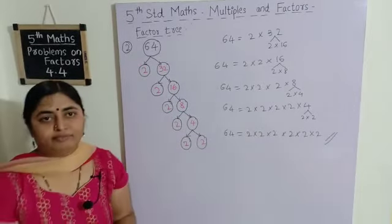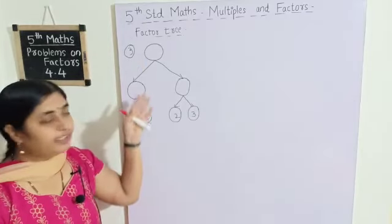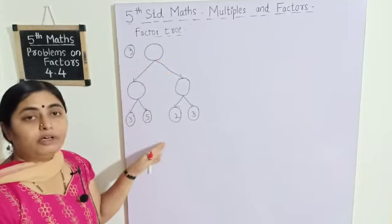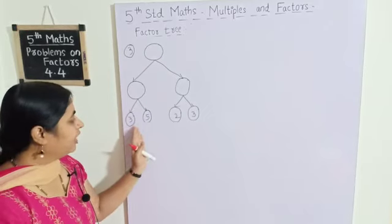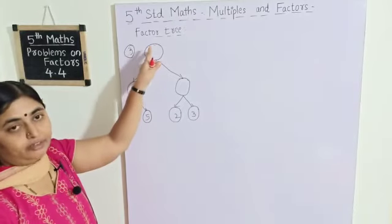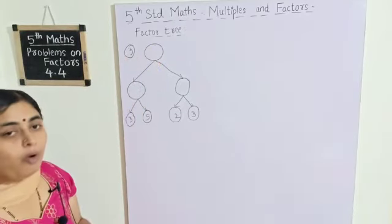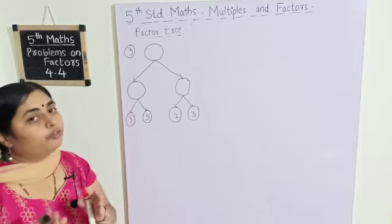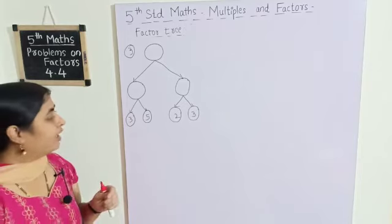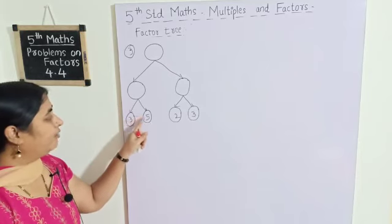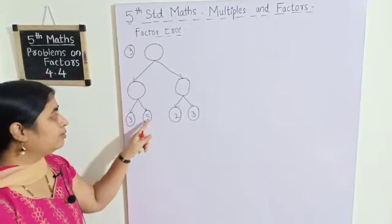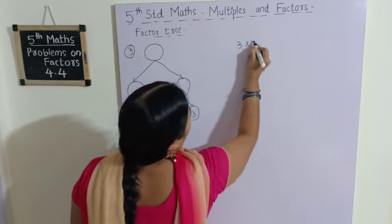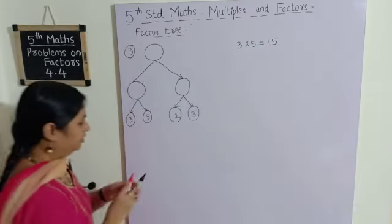Now we will see the third example, which is a bit different. Previously they gave us numbers and we found the factors. Now they have given the prime factors and in reverse we have to find the original number. They have given 3 into 3, and 5 — and these branch off from a number, so we multiply them: 3 into 5 equals 15.